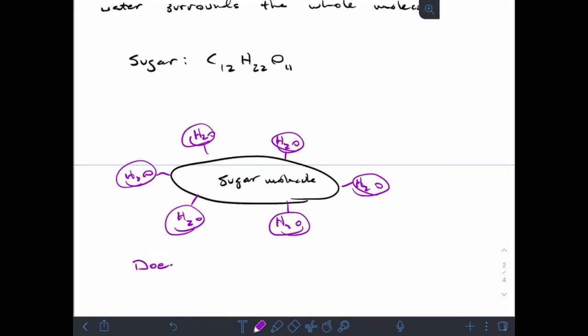But it doesn't make ions. This is an important distinction: ionic compounds will make ions in solution, covalent compounds do not make ions in solution.